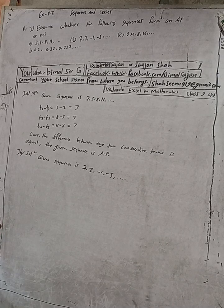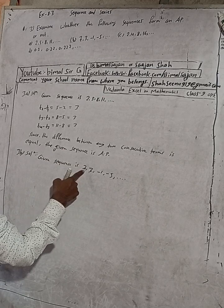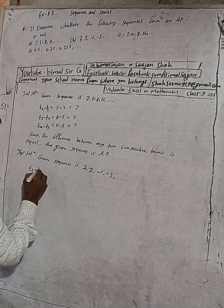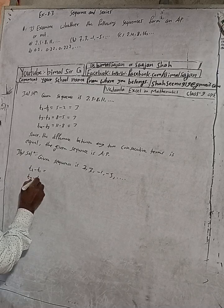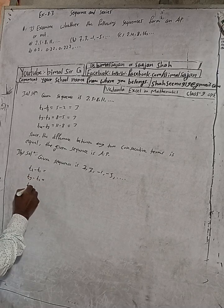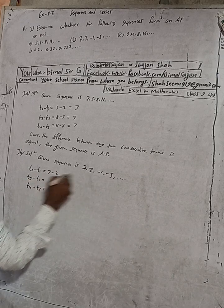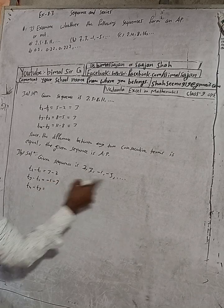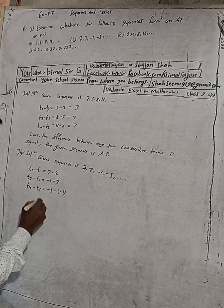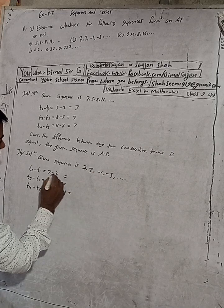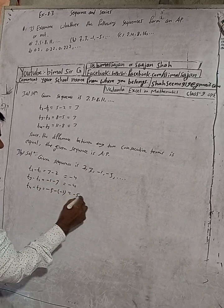Again, find the difference between two consecutive terms: T2 minus T1, T3 minus T2, and T4 minus T3. So T2 minus T1 is 3 minus 7, T3 minus T2 is -1 minus 3, and T4 minus T3 is -5 minus (-1). Solving: 3 minus 7 is -4, -1 minus 3 is -4, and -5 minus (-1) equals -4.